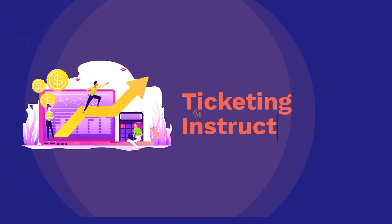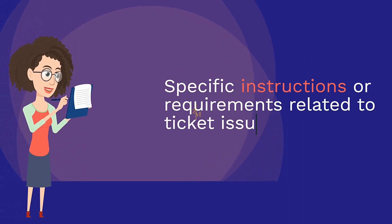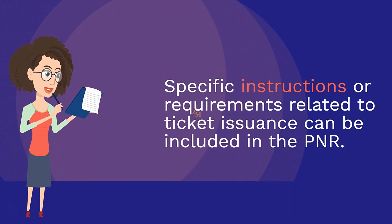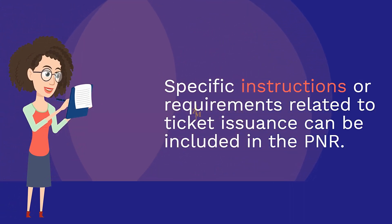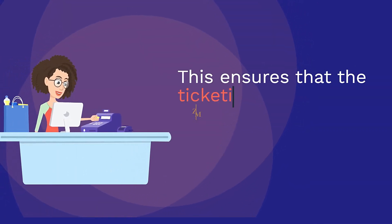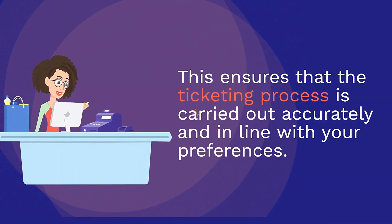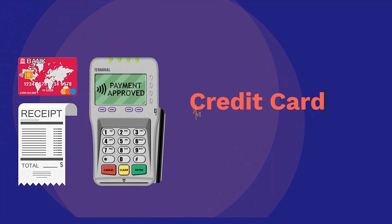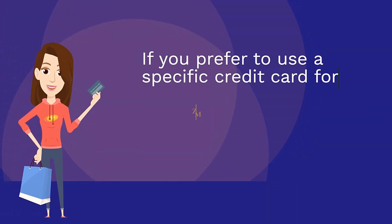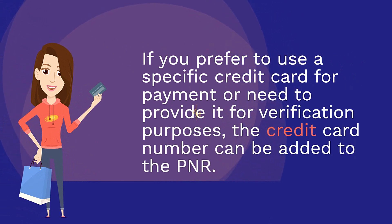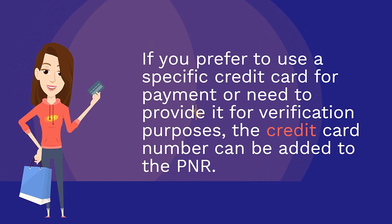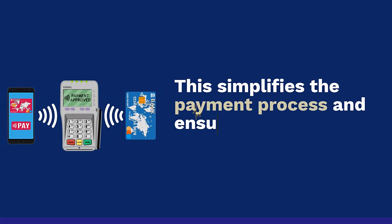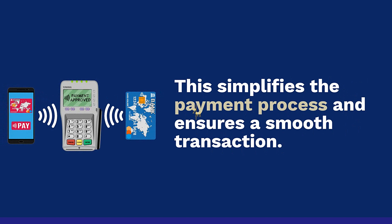Ticketing Instructions — specific instructions or requirements related to ticket issuance can be included in the PNR. This ensures that the ticketing process is carried out accurately and in line with your preferences. Credit Card Numbers — if you prefer to use a specific credit card for payment or need to provide it for verification purposes, the credit card number can be added to the PNR. This simplifies the payment process and ensures a smooth transaction.